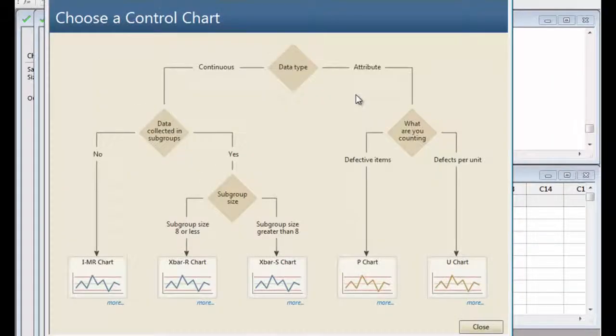The Assistant's decision tree guides you to the appropriate control chart for your situation. Since we have continuous data that has not been collected in subgroups, choose the IMR chart.